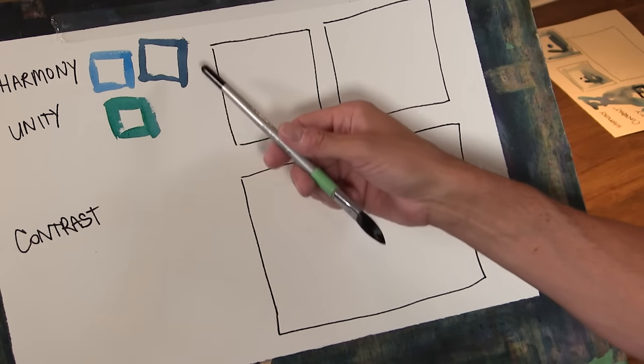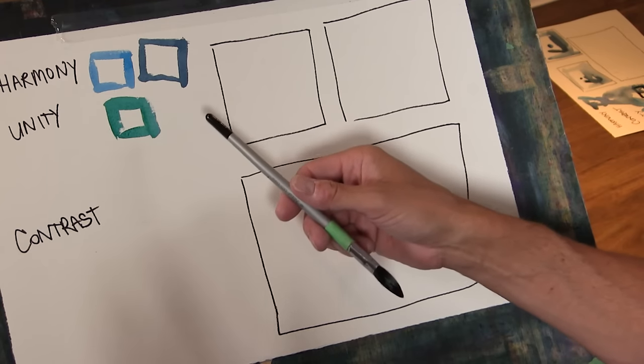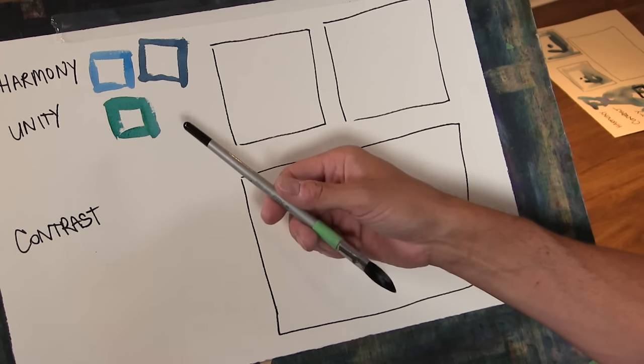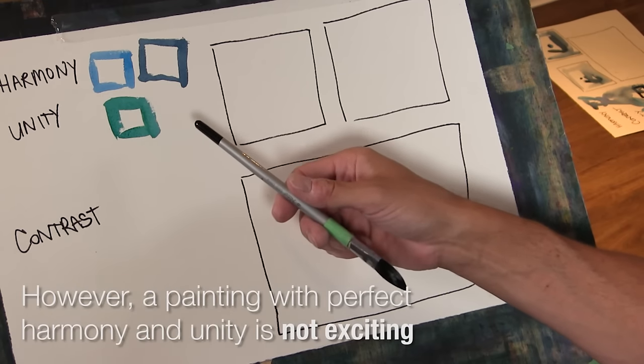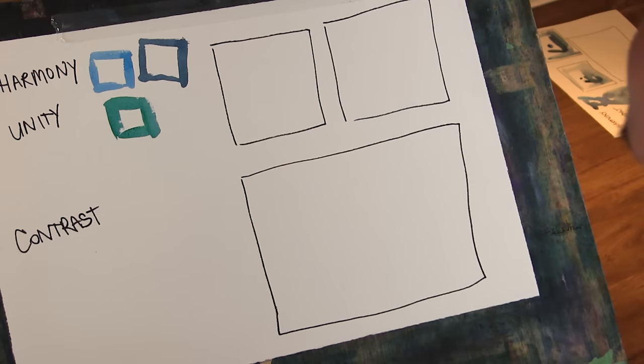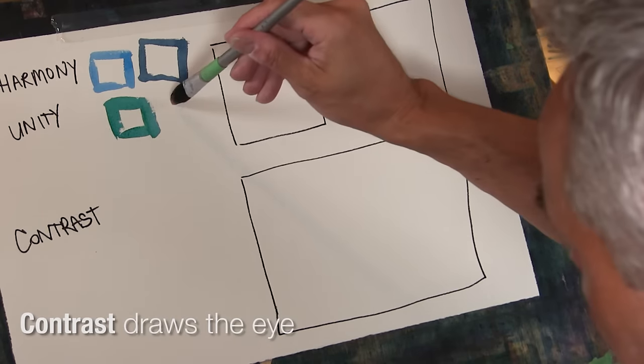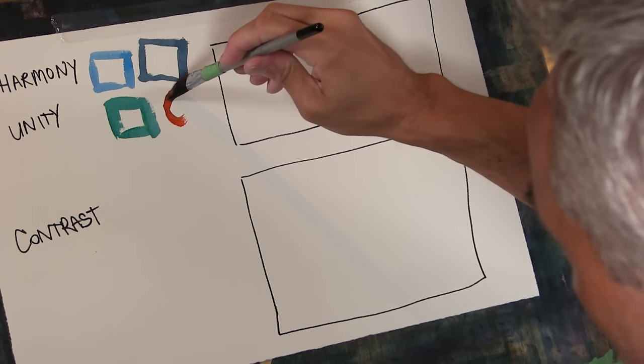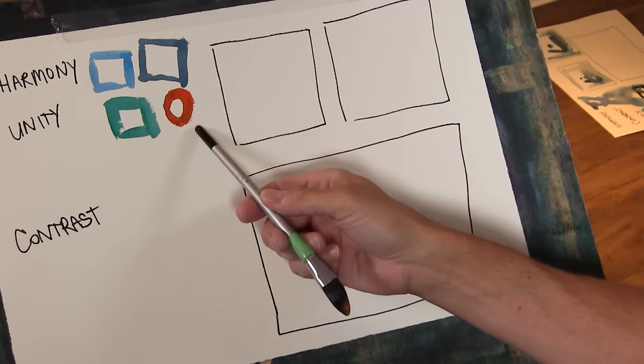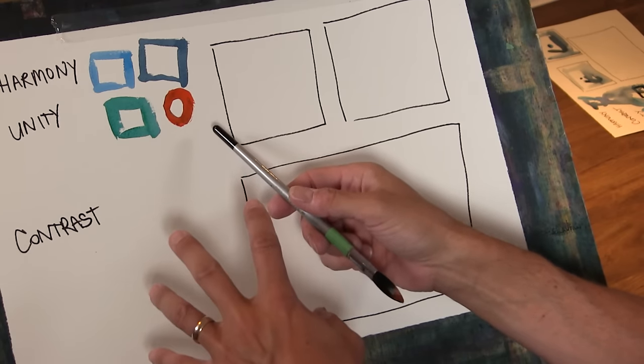Well the problem with having just all harmonious shapes, colors, and values is while we get unity, we don't have any excitement or drama in our painting. We get drama through contrast, and contrast is what really draws our eye. So if I were to come in here and do an orange circular shape, now that draws a lot more attention. We can use contrast to focus the eye.